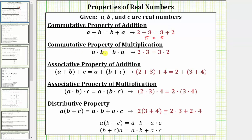Next, we have the commutative property of multiplication, which is given as a times b equals b times a. Here we are changing the order of a product. For example, two times three equals three times two. Verifying this: two times three equals six, and three times two also equals six.